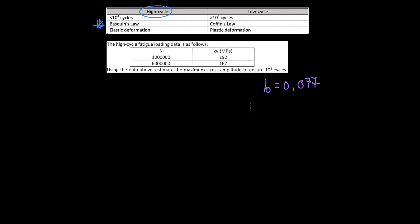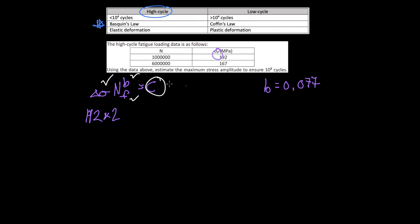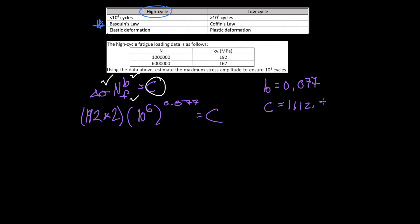Now we need the C value. We plug our B value back into the original Baskin's Law equation: change in stress times number of cycles to failure raised to B equals C. The stress range is 192 times 2 (converting from stress amplitude), the number of cycles to failure is 10 to the 6, and B is 0.077. This gives us C equal to 1112.57.